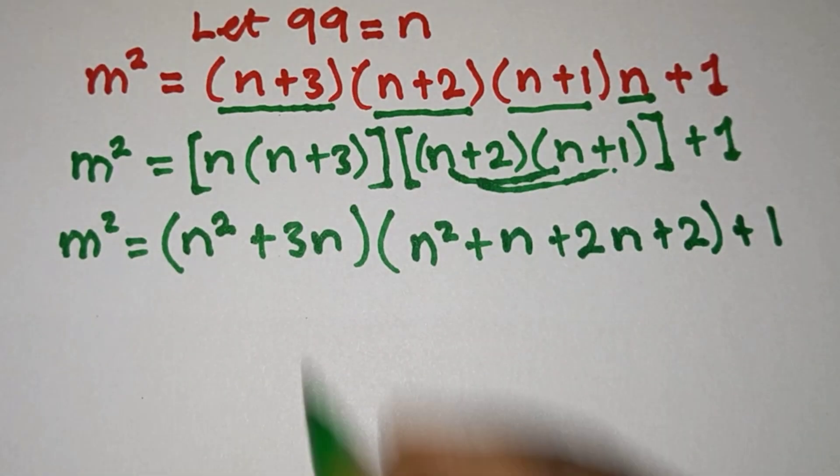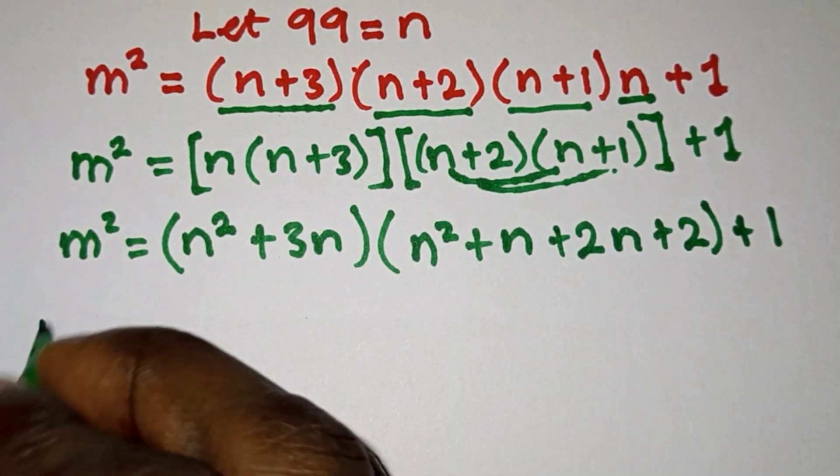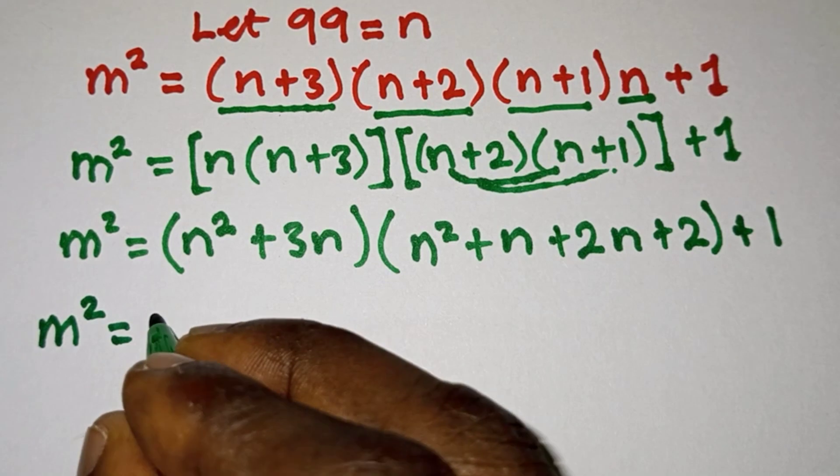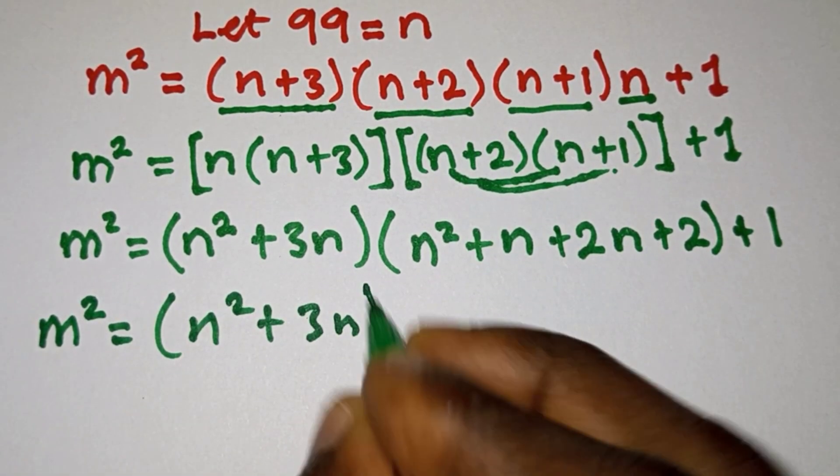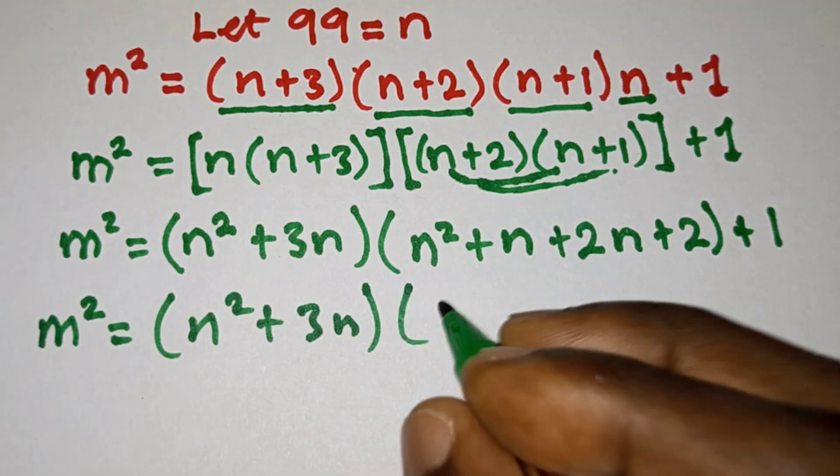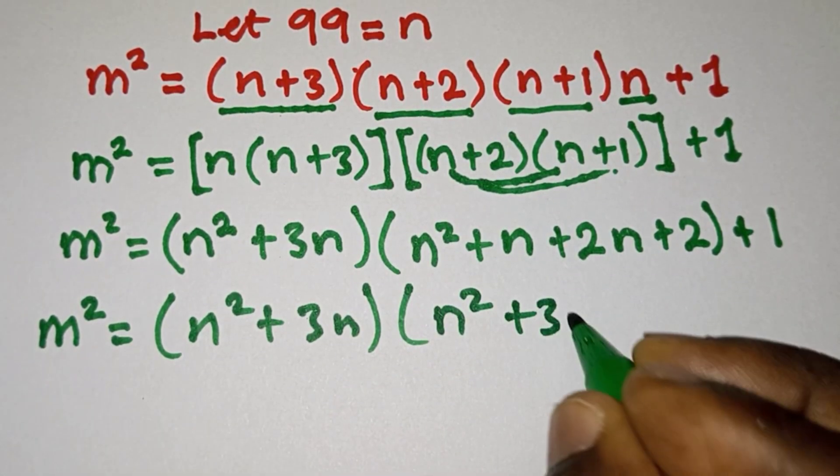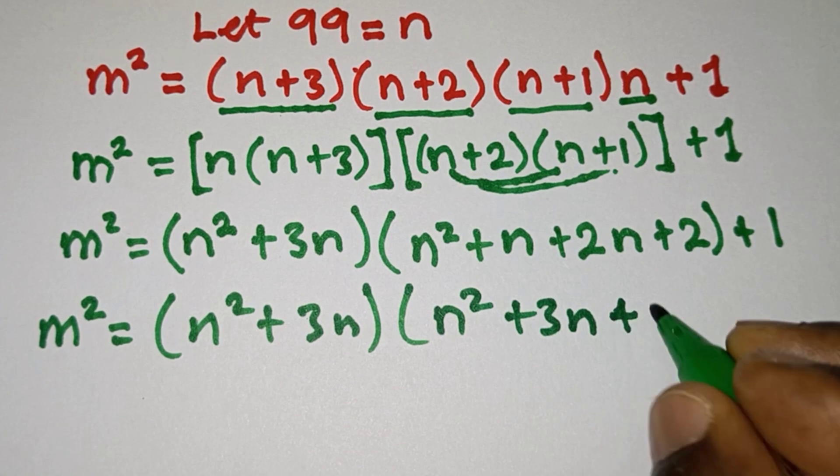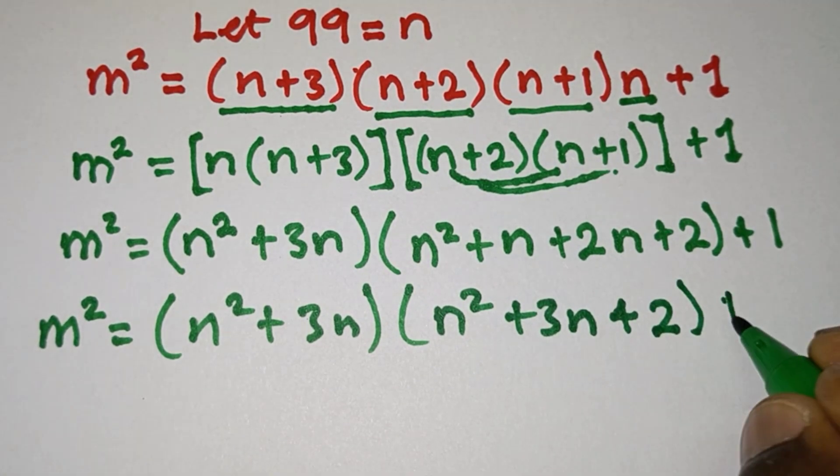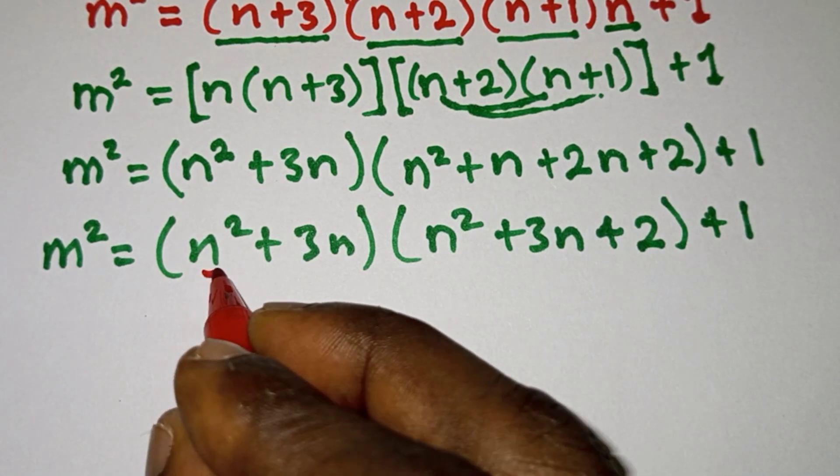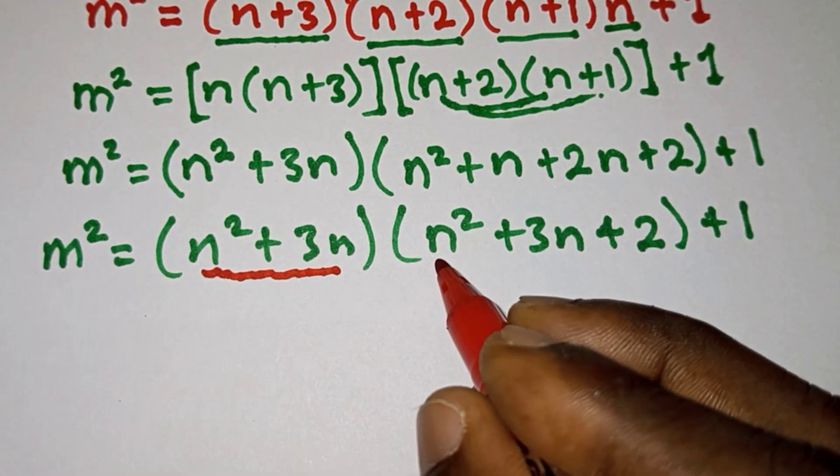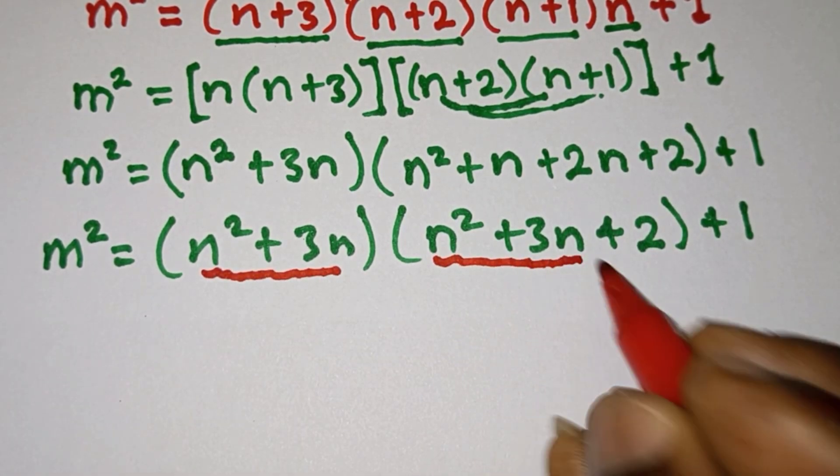So we can simplify this. We have m² = (n² + 3n)(n² + 3n + 2) + 1. Now we see that we have n² + 3n and then we have the exact same thing here.